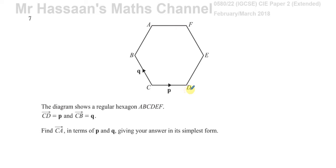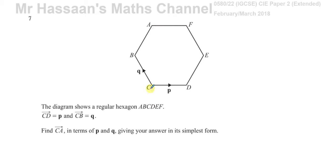They've asked us to find the vector from C to A. Now, we could go from C to B and then B to A, but we can't say that B to A equals vector q, nor can we say it equals vector p. Even though it's a regular hexagon and those sides are the same length, they're not in the same direction. A vector must have both direction and magnitude — the same magnitude alone doesn't make it the same vector.